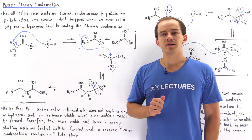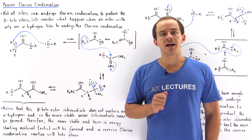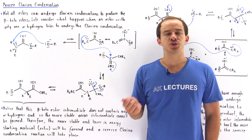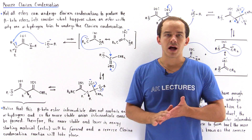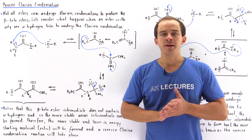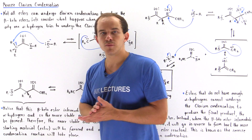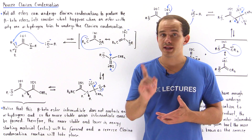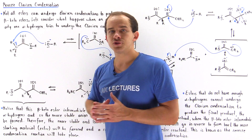Not all ester molecules can undergo the Claisen condensation reaction to produce beta-ketoester products. To see what we mean, let's suppose we have an ester molecule that contains only a single alpha hydrogen.